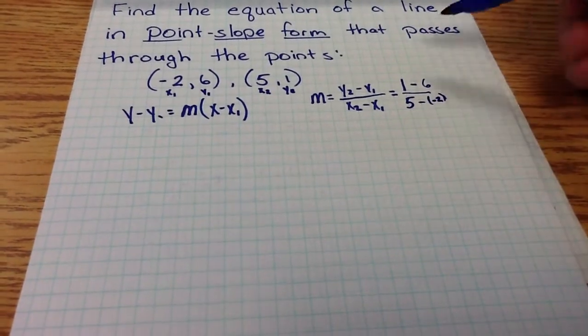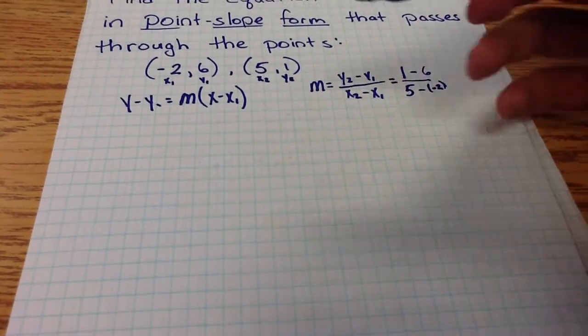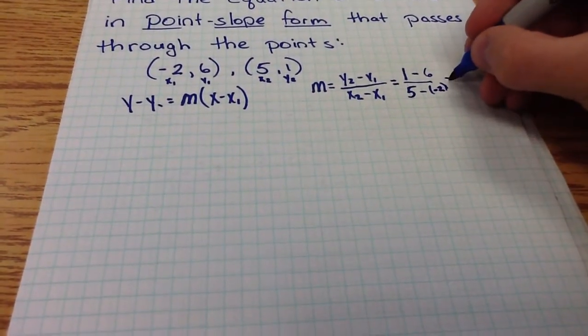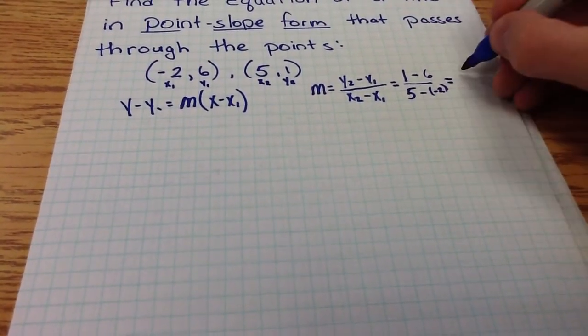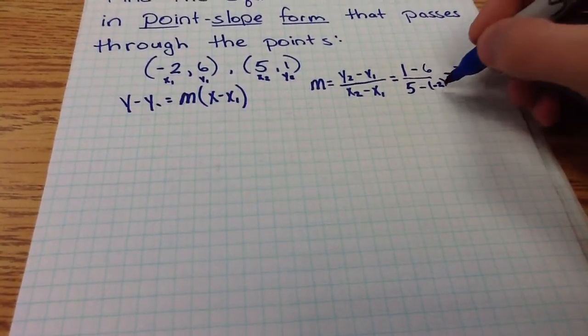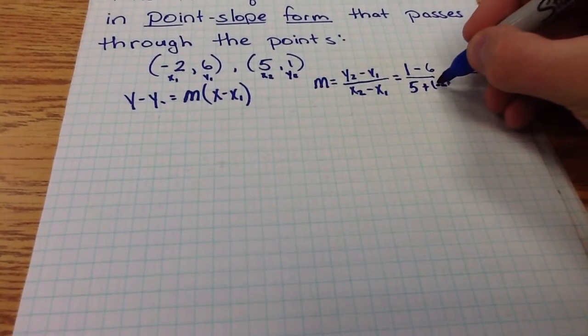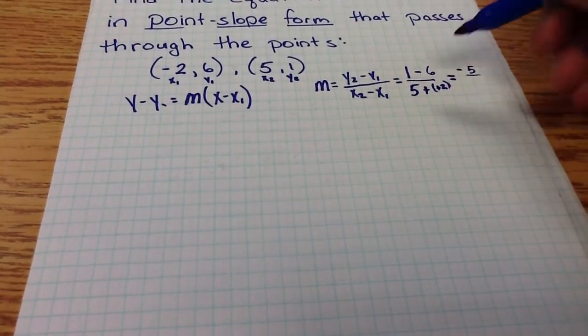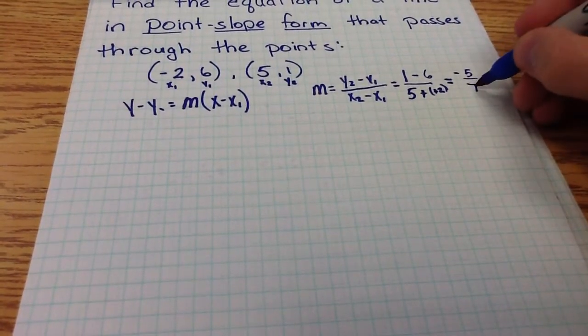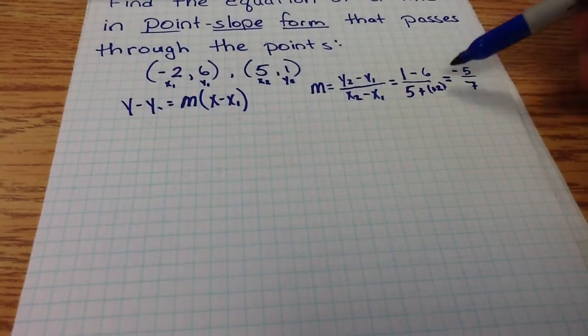Notice, plugging in the negative 2, I did use parentheses so that I realized that two negatives here will eventually yield a positive. 1 minus 6 does give me negative 5, and 5 minus negative 2, if I change this minus sign to a plus, allows me to change this negative to a plus as well. So it yields 5 plus 2, which gives me 7. So our slope, then, is negative 5 sevenths.